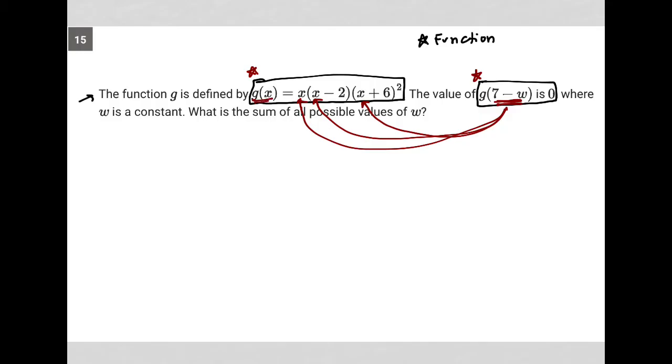We went from g(x) to g(7 - w), so I'm going to replace each of these places where I have an x with 7 minus w. That's the process.